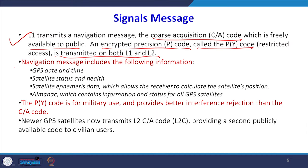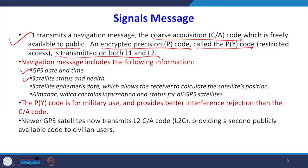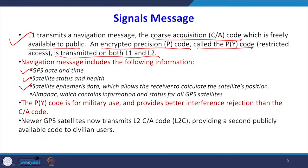Navigational messages contain the following information: the GPS date and timing, the satellite status and health, the satellites which are tracked, and ephemeris data of the satellites. This is very important, as it allows the receiver to calculate the position of the satellite. Once we have the ephemeris data transmitted, we can get the position of the satellite.